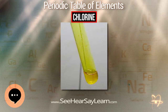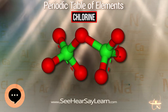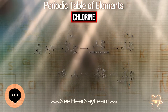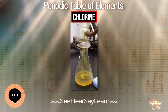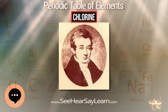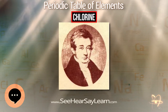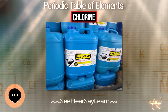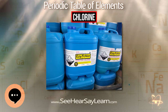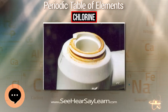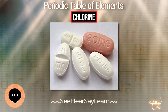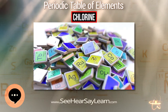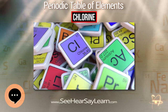Since chlorine gas is one of the products of the aqua regia reaction, it was not recognized as a new substance. Around 1630, chlorine was recognized as a gas by the Flemish chemist and physician Jan Baptist van Helmont. The element was first studied in detail in 1774 by Swedish chemist Carl Wilhelm Scheele, who is credited with the discovery. Scheele produced chlorine by reacting MnO₂ with HCl and observed several of its properties: the bleaching effect on litmus, the deadly effect on insects, the yellow-green color, and the smell similar to aqua regia.